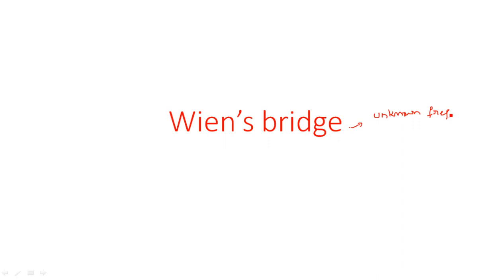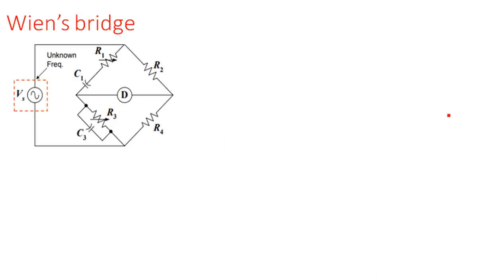Wien's bridge measures the unknown frequency of the applied signal. The bridge consists of four arms: the first arm has a series R and C (series resistance and capacitance); the second arm is purely resistive; the third arm has a parallel combination of resistance R3 and capacitance C3; and the fourth arm is a pure resistive network R4. The unknown frequency signal is applied at the input, and a detector is used.